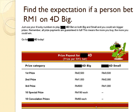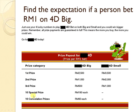Look at this example. Find the expectation if a person bets RM1 on 4D. Just use your lucky number to play 4D — the more you buy, the more you could win. This is the prize payout for every RM1 bet. If you win the first prize, you will get RM2,000 from the company. There is one second prize, one third prize, then special prizes, and then consolation prizes.